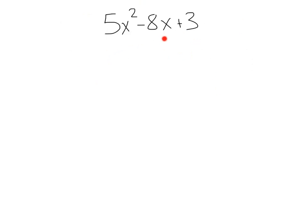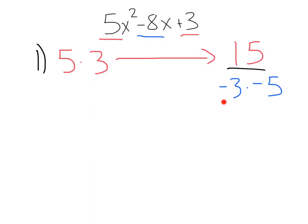Here we've got 5x squared minus 8x plus 3. First, we've got 5 times 3, A times C, to give us 15. Then we find our factors, negative 3 times negative 5 is positive 15. Negative 3 plus negative 5 adds to our B term, negative 8.